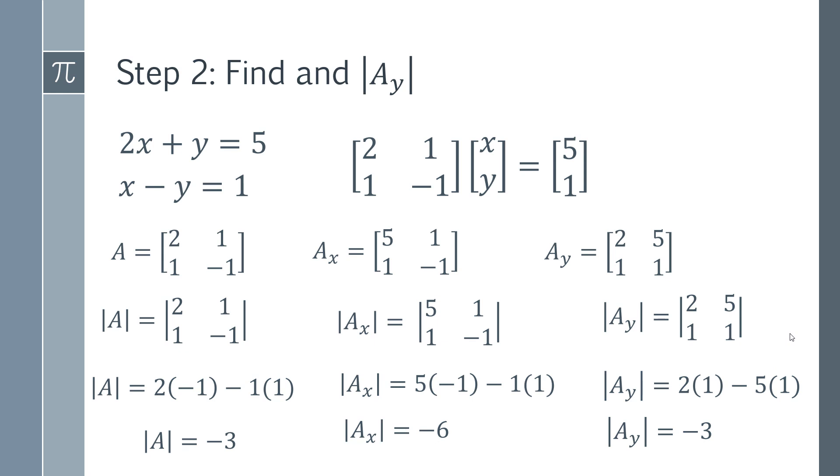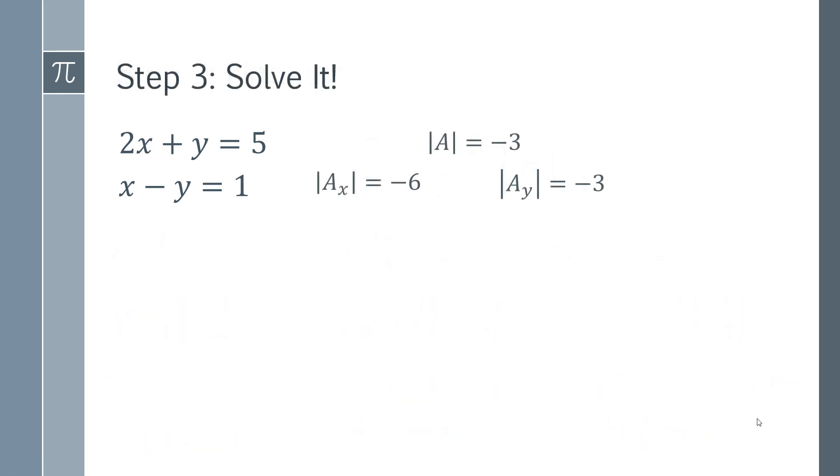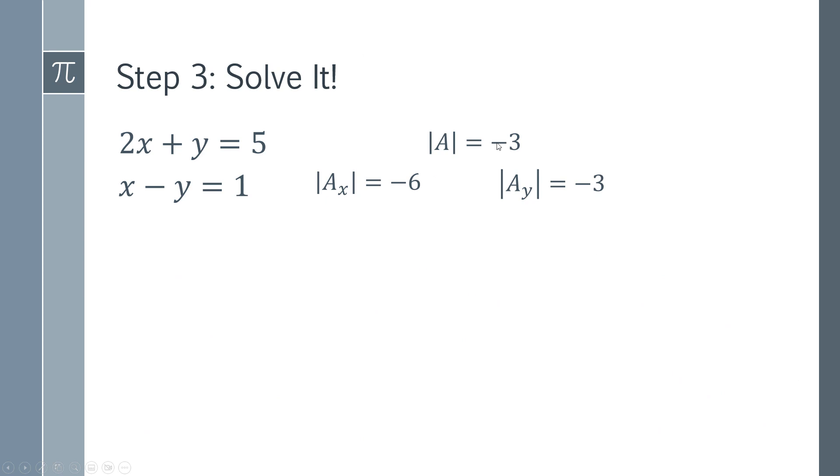This is the point that we can actually start getting a solution. If we apply the rule, we can see that X equals the determinant of AX divided by the determinant of A. We've already calculated those, so we substitute and get X equals 2.